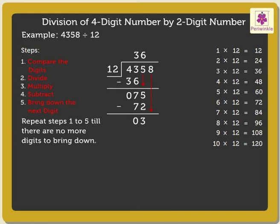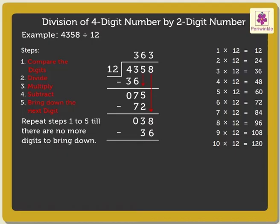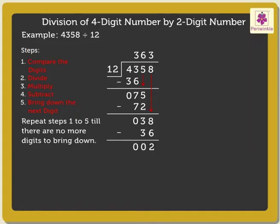Now, bring down the next digit, that is, eight. Here we again compare thirty-eight and twelve. Thirty-eight is greater than twelve, so we can divide thirty-eight by twelve. The nearest product in the table of twelve to thirty-eight is thirty-six. So, we write three in the quotient above the eight and thirty-six under thirty-eight. Subtract thirty-six from thirty-eight, which is equal to two. As there are no more digits to bring down, we have finished our division. Thus, we get the quotient as three hundred sixty-three and remainder as two.